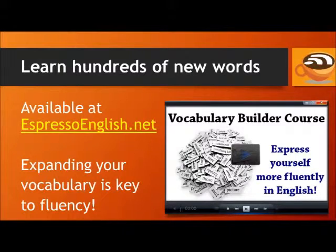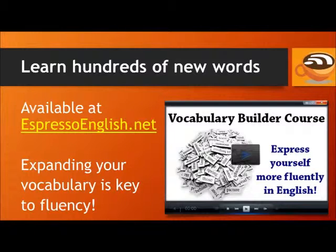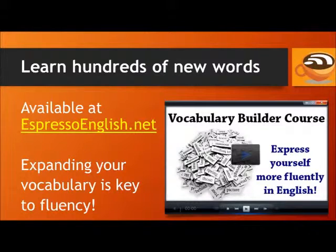If you want to learn hundreds of new words, check out the Vocabulary Builder course available at EspressoEnglish.net. Expanding your vocabulary is key to fluency, and this course has two levels. Level 1 is for pre-intermediate and intermediate students, and Level 2 is for upper-intermediate and advanced. You can also buy both levels together at a discount. Visit EspressoEnglish.net, click on Courses, and look for the Vocabulary Builder.